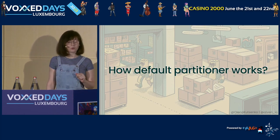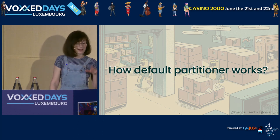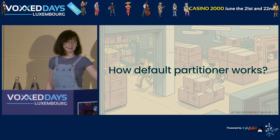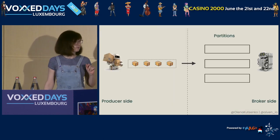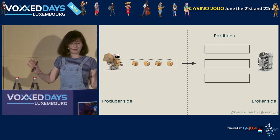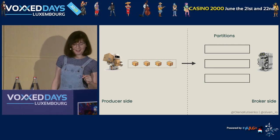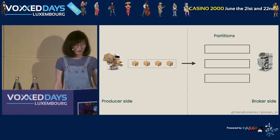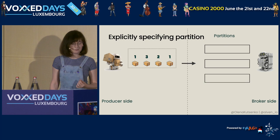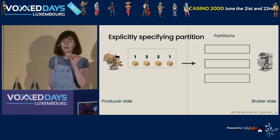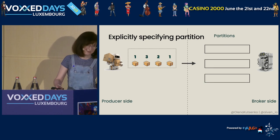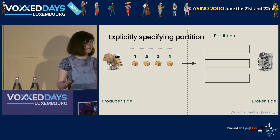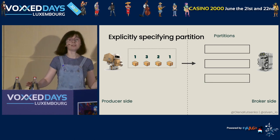Moving on to how a partitioner works. Starting with the default partitioner — there are three ways it determines where exactly to put your data into which partition. On one side I have a producer, and on the other side I have partitions distributed across multiple brokers. When selecting a partition, the first thing the producer will look at is whether you explicitly specified the partition number for your records. Usually you don't want to do that, but if you have to, you can. I call it micromanagement and would rather discourage this functionality — however, for some use cases, this is very, very handy.